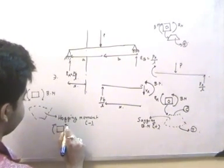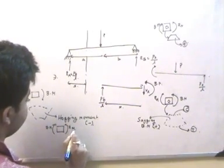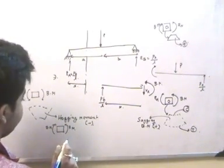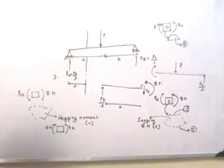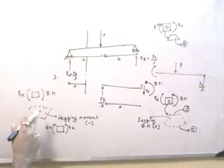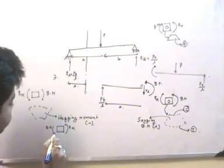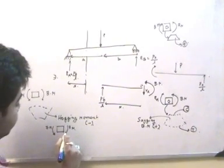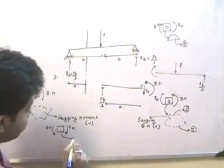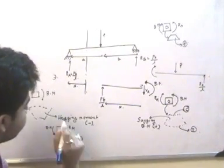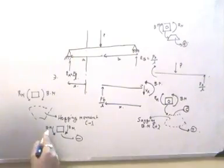If we consider the right portion of the beam, the bending moment and resultant moment will look like this. When considering the right portion, if it looks like this, it will be a hogging moment and therefore it will be negative.